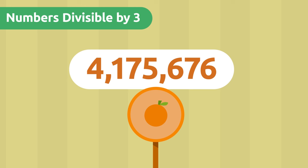There are 4,175,676 oranges to sort — that's a huge number, but that's okay. We'll do it one step at a time: 4 plus 1 is 5, 5 plus 7 is 12, 12 plus 5 is 17, 17 plus 6 is 23, 23 plus 7 is 30, and 30 plus 6 is 36. Let's check if 36 is divisible by 3. Dividing 36 by 3, the remainder is zero, so 36 is divisible by 3. Since 36 is the result of adding the digits, applying the divisibility rule of 3 means there will be none left over if we pack 3 in each box.